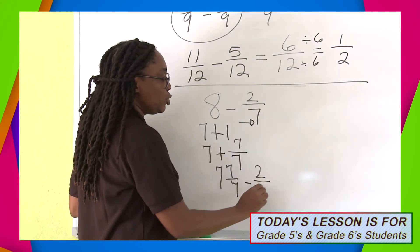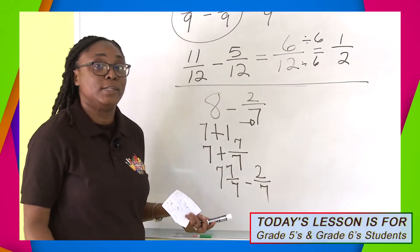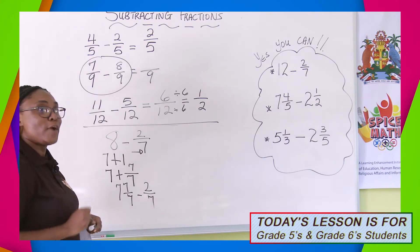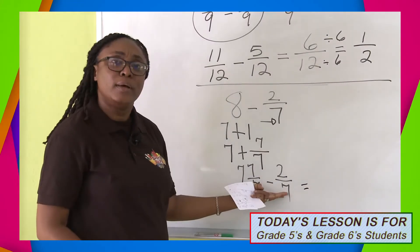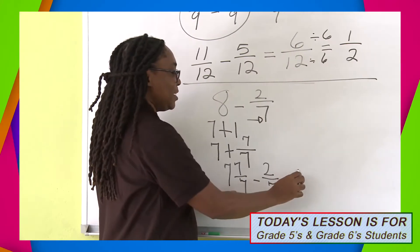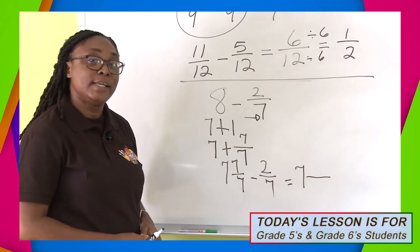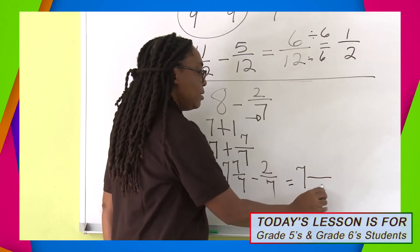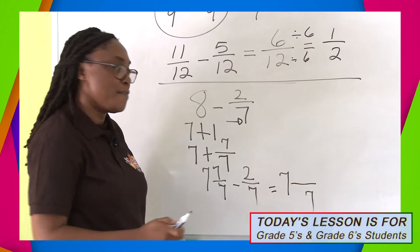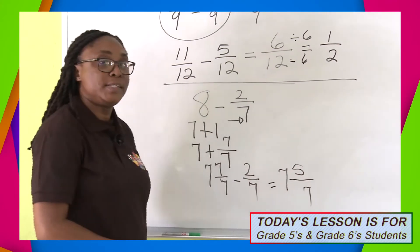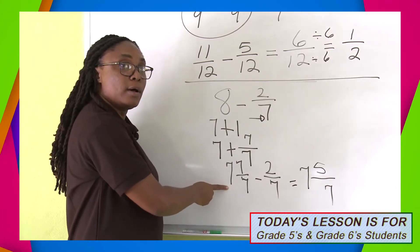So I'm actually working with 7 and 7 over 7, and I'm going to take 2 sevenths from it. It's easy now because we did fractions with similar denominators earlier. Do I have a whole number to take from the 7? No, so I keep my 7. The denominators are the same — keep the denominator. I'm subtracting 2 from 7. That gives me 5. So the answer is 7 and 5 over 7.